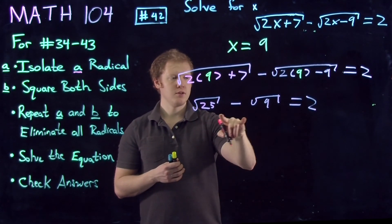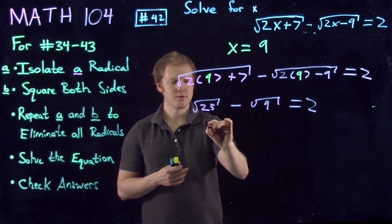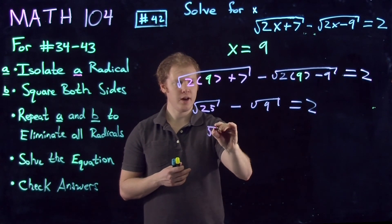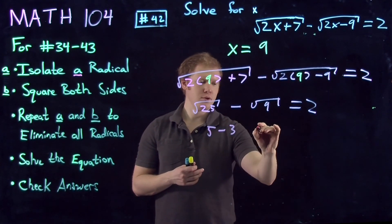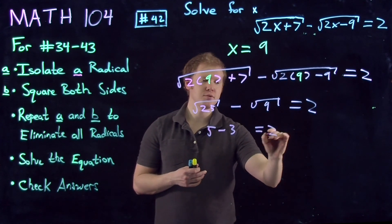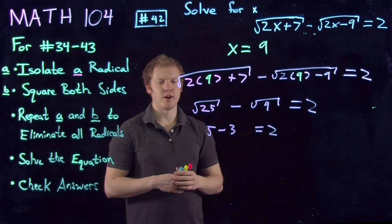If we note carefully that these are both perfect squares, we get 5 minus 3, which in fact equals 2. So we have a valid solution.